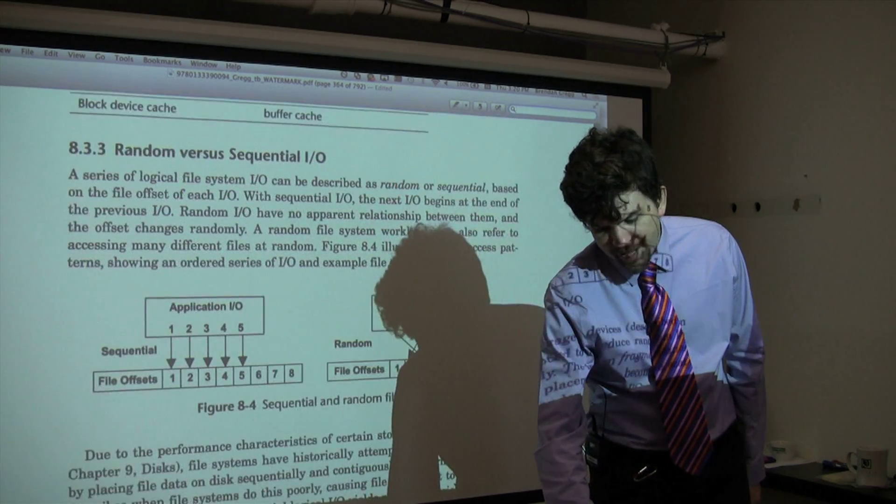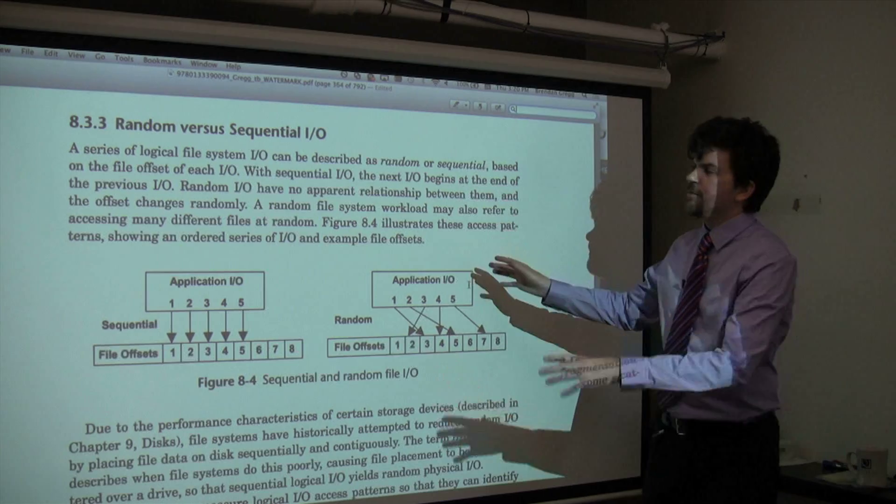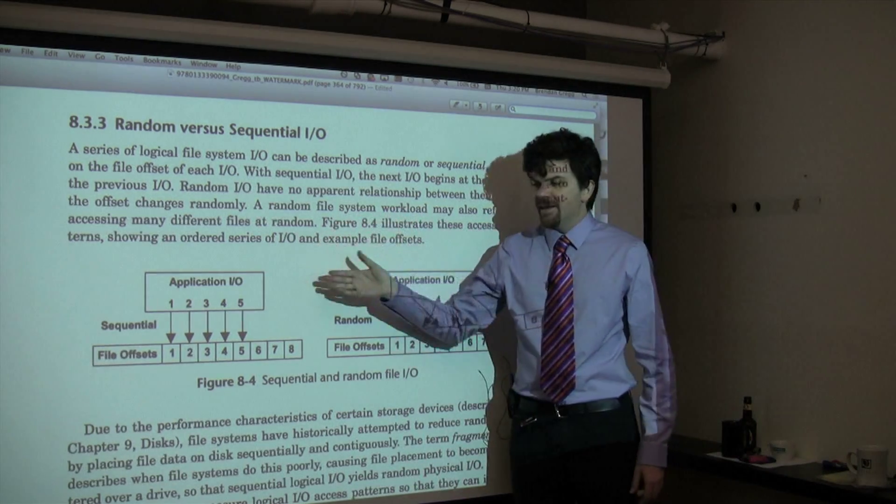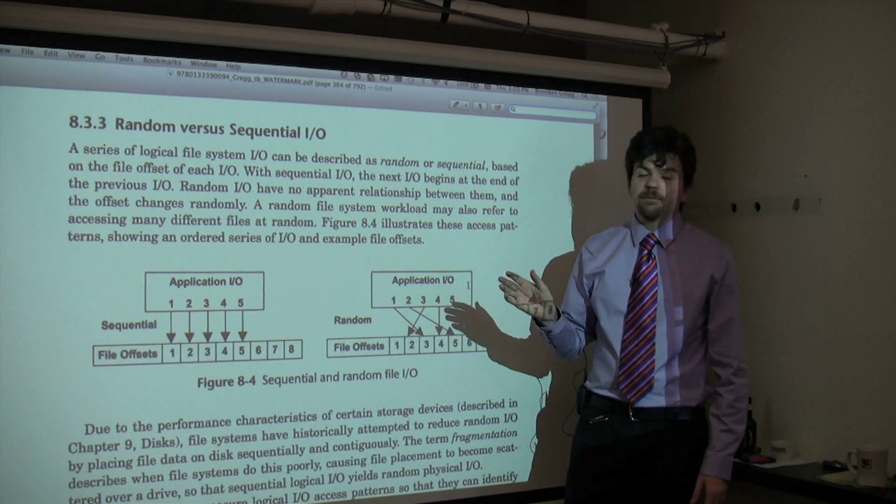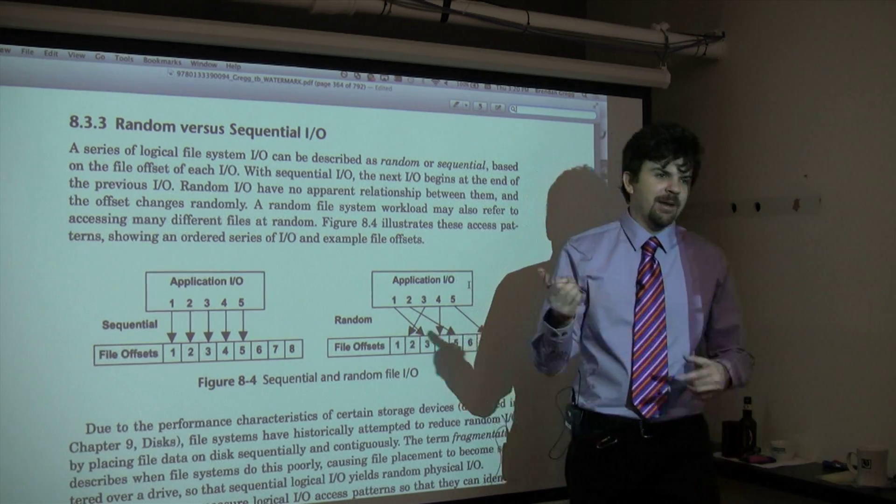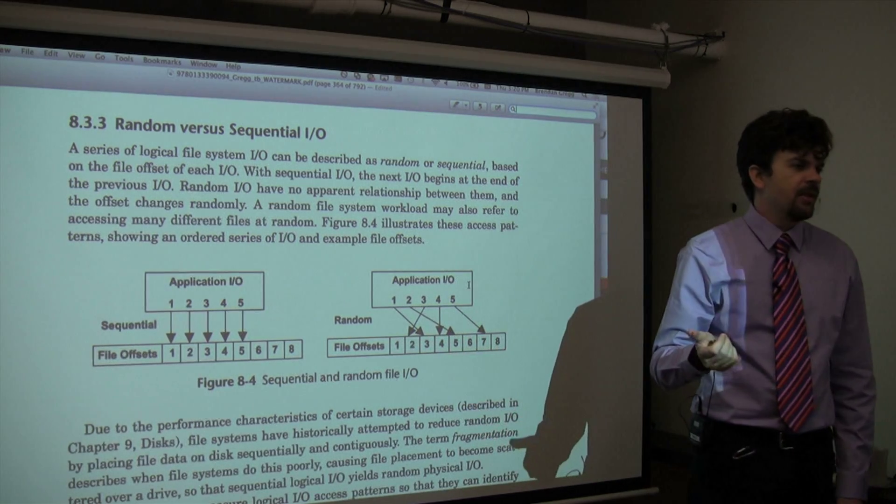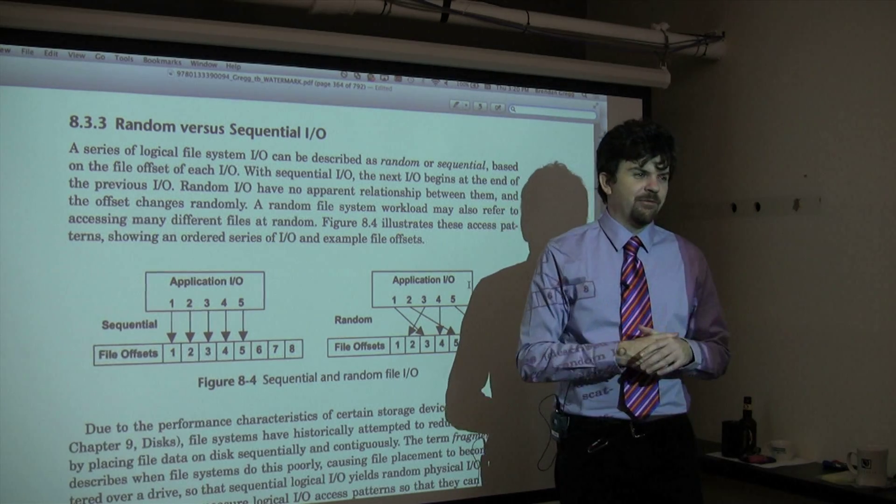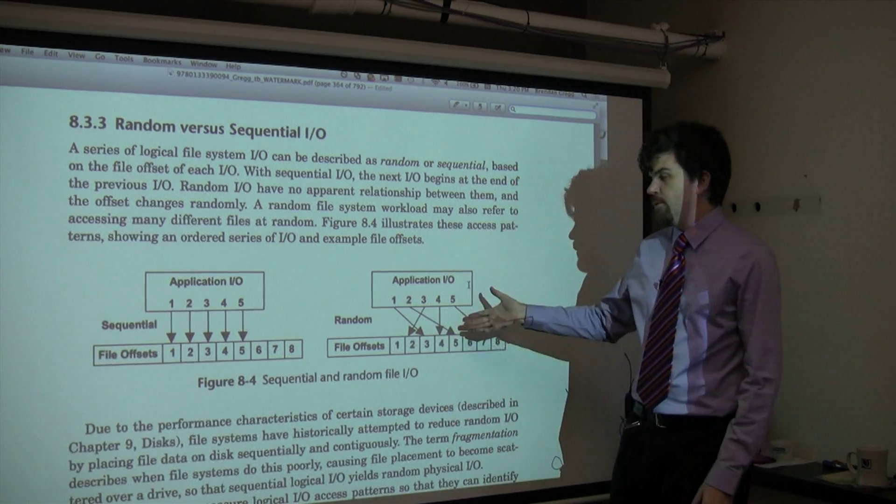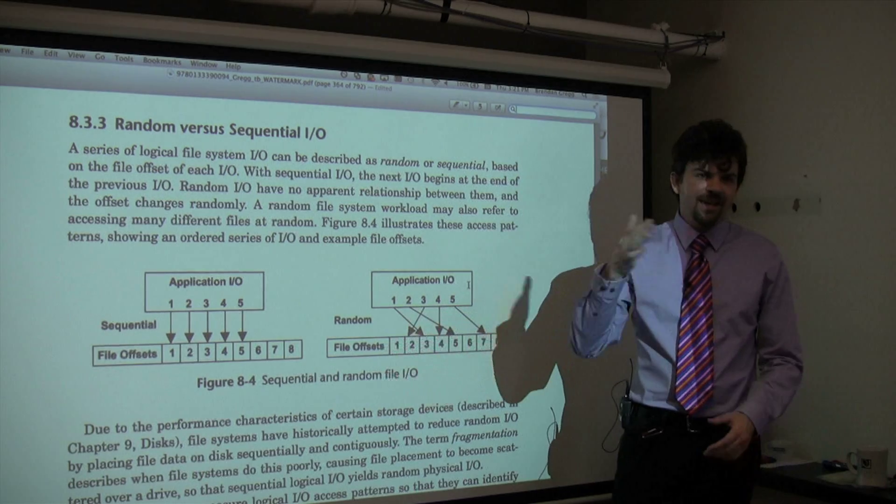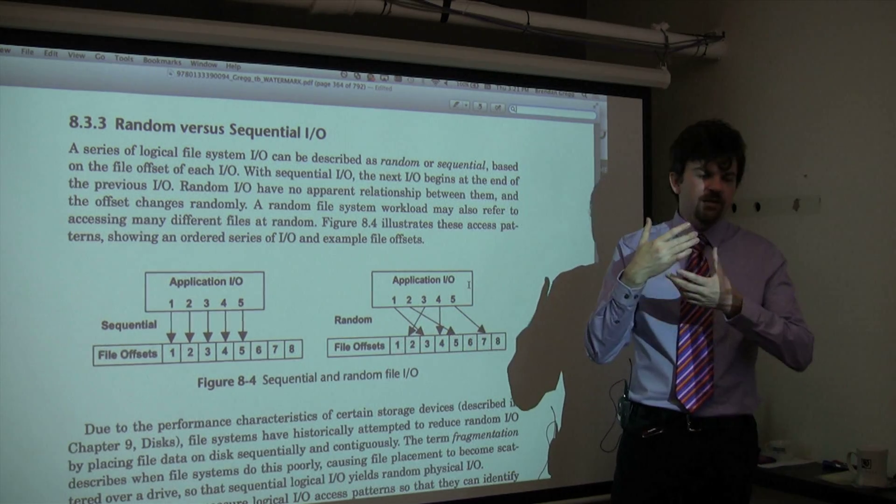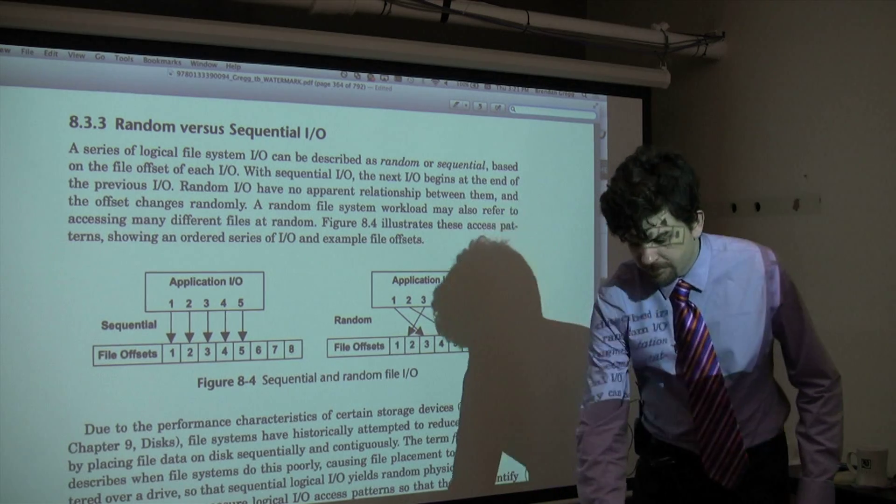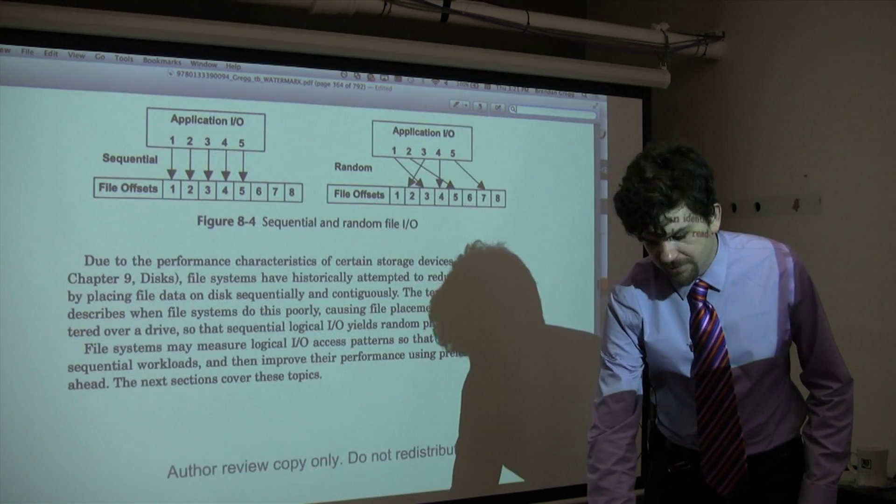You'll see me go back and refer to these terms often: random and sequential, because these matter for the type of storage device. We'll talk about it more in the next chapter on disks. Obviously the rotational disks that we're familiar with perform poorly with random I/O workloads because the heads have to seek around and you're waiting on the platter rotation latency. But at this point we just need to understand what the terms mean.